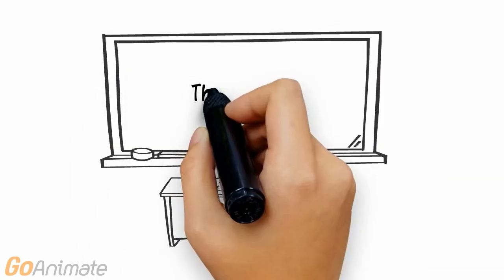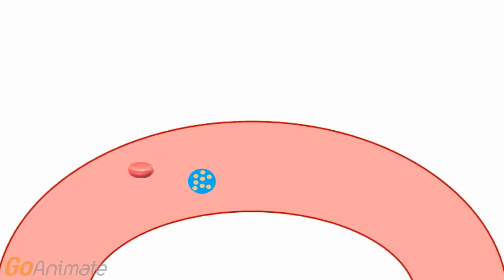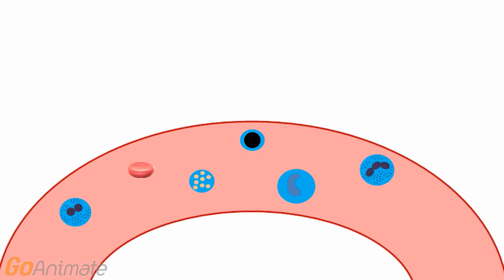Let's learn about the blood. The blood is a connective tissue which consists of substances suspended in a fluid matrix called plasma. These substances include red blood cells, white blood cells, and platelets.